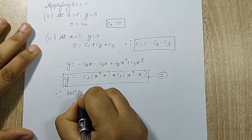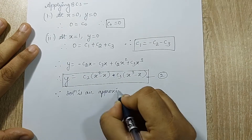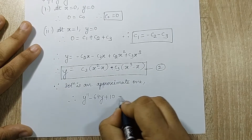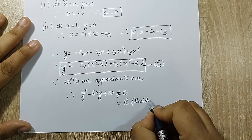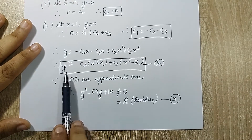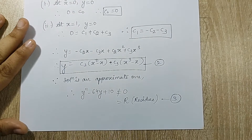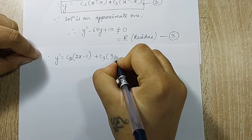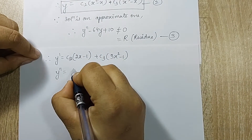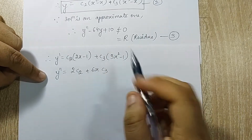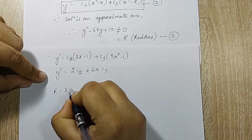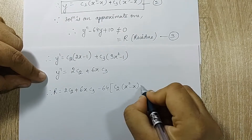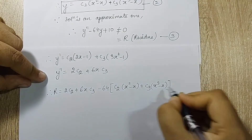Since the solution is an approximate one, y double dash minus 64y plus 10 cannot equal 0 — it will equal some term r, which is the residue. I mark this as equation 3. Using the equation of y, I will find y double dash and substitute to get an equation for r. So y dash equals c2*(2x minus 1) plus c3*(3x squared minus 1), and y double dash equals 2*c2 plus 6x*c3. Substituting, r equals 2*c2 plus 6x*c3 minus 64*(c2*(x squared minus x) plus c3*(x cubed minus x)) plus 10.